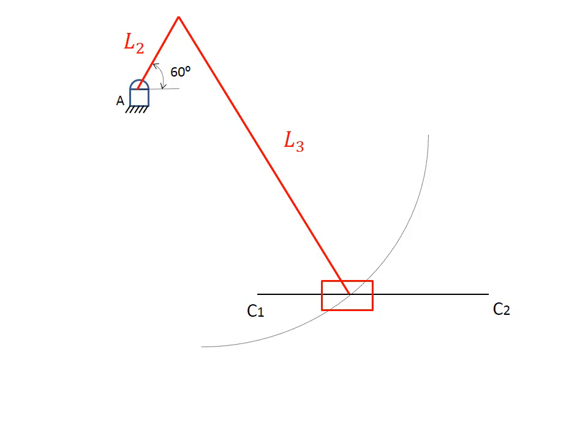This arc is going to intersect the line C1, C2, and that's the point of C, which is basically moving along the axis of the stroke. This is our mechanism at the crank, which is located at 60 degrees.